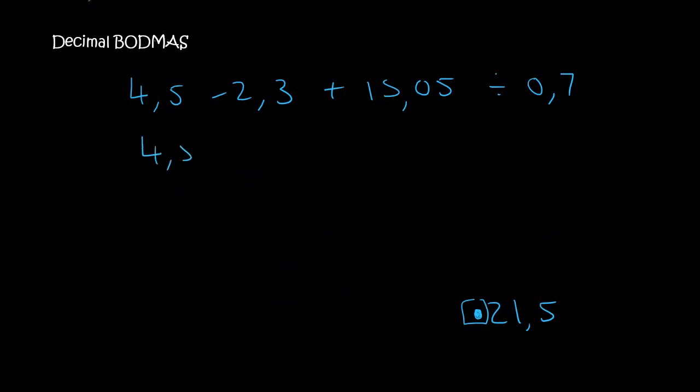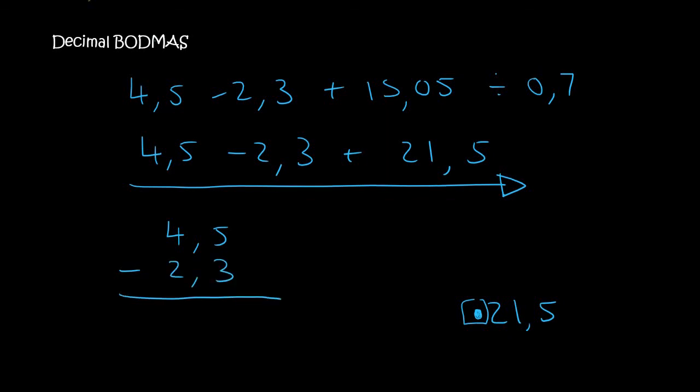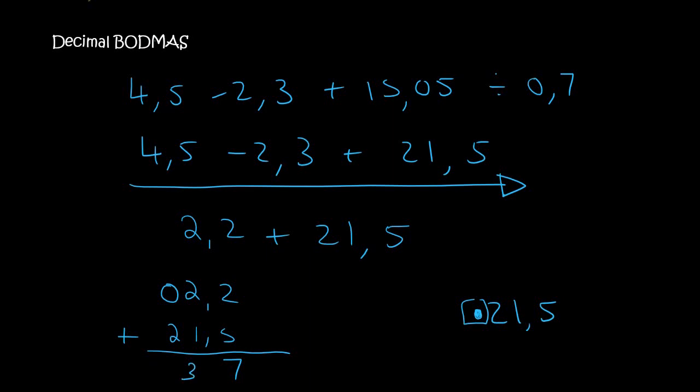So now what we have is 4.5 minus 2.3 plus 21.5. When you only have plus and minus, remember you must move from left to right. So 4.5 minus 2.3. Let's do that first. Remember when you're plussing and minusing, the decimals are very important. They must be under each other. 5 minus 3 is 2. 4 minus 2 is 2. So that's 2.2. So then what we have is 2.2 plus 21.5. The decimals must be on top of each other. If there's any empty spaces, you just put a 0. And so we're adding. So 2 plus 5 is 7. 2 plus 1 is 3. There's a decimal. So I must put a decimal there. 0 plus 2 is 2. And so this entire answer is 23.7.